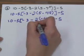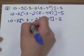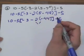Inside the brackets, we have minus 3 minus 2 times negative 44. Since multiplication comes before subtraction, we're going to do that one first.